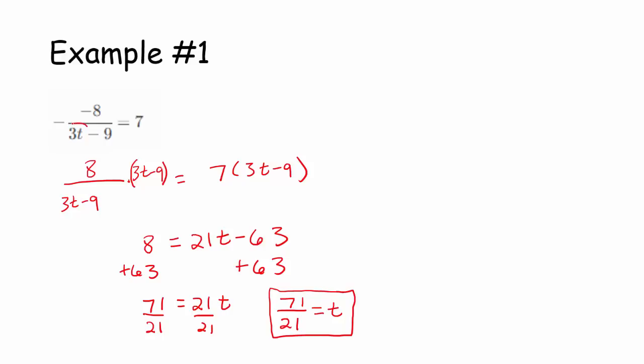So, I've got to be a little bit careful, because this expression, the 3t minus 9, cannot equal 0. So we've got to be careful here, because sometimes we can get answers for t that actually make the equation undefined.